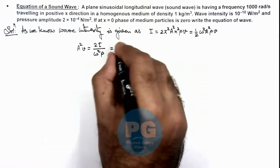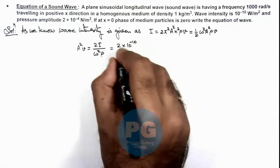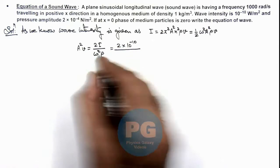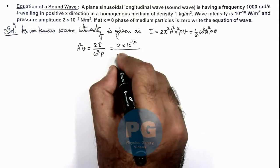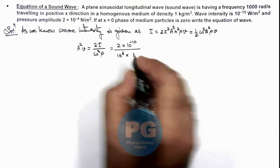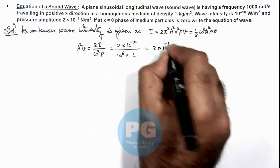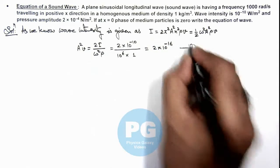So we can substitute 2 multiplied by intensity is 10 to power minus 10, divided by omega is 1000 so omega square is 10 to power 6 multiplied by density is 1. So this value of A²v we are getting is 2 into 10 to power minus 16, that is say our first equation.